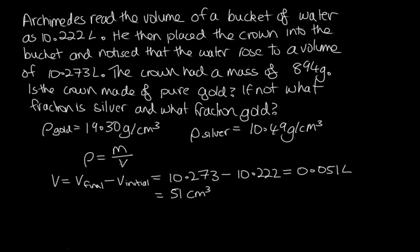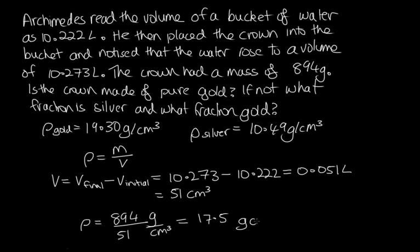We've now got the volume, so we can get the density. The density equals 894 grams over 51 centimetres cubed, giving us a density of 17.5 grams per centimetre cubed. This is less than the density of gold, so this tells us the crown is not made of pure gold.